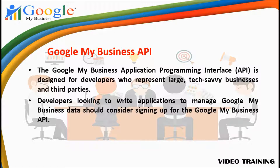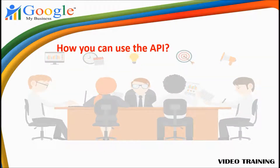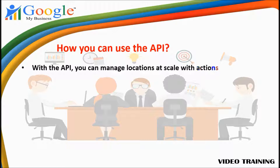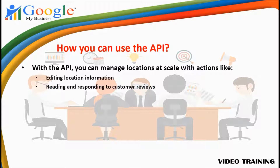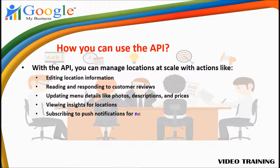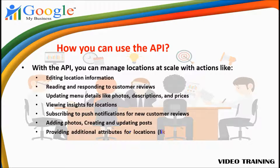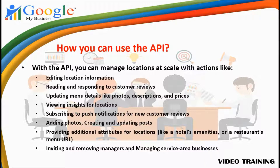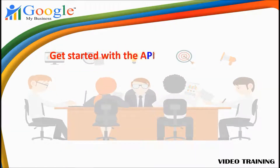Developers looking to write applications to manage Google My Business data should consider signing up for the Google My Business API. With the API you can manage locations at scale with actions like editing location information, reading and responding to customer reviews, updating menu details like photos, descriptions and prices, viewing insights for locations, subscribing to push notifications for new customer reviews, adding photos, and creating and updating posts.